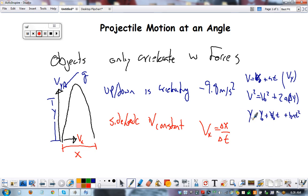Final displacement equals initial position, which is always 0 for this class, plus velocity initial times time plus 1 half acceleration times time squared. This would be your final distance. So, that's just a review.